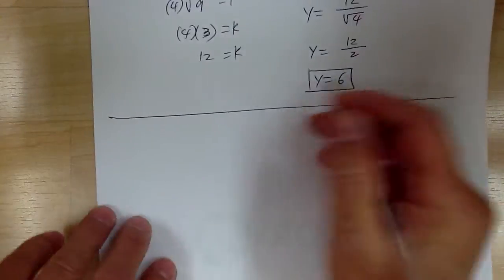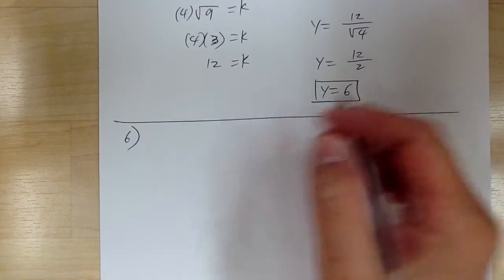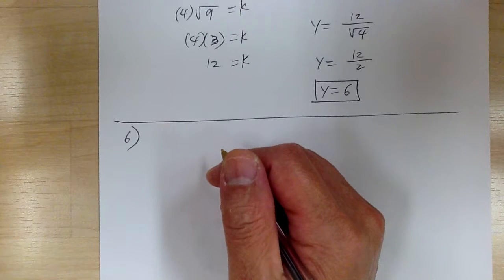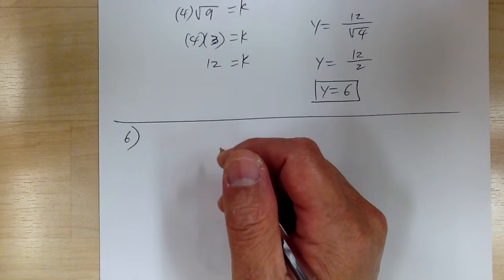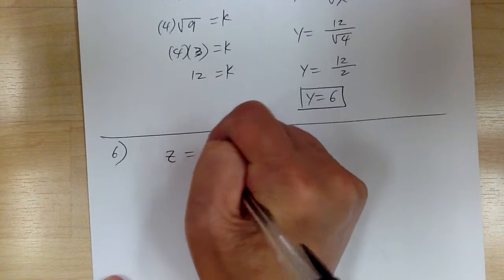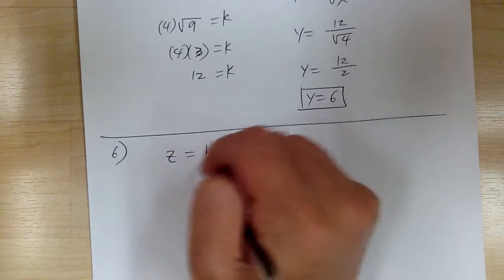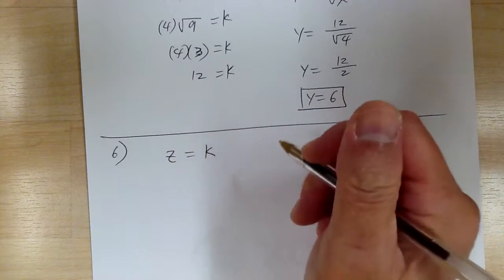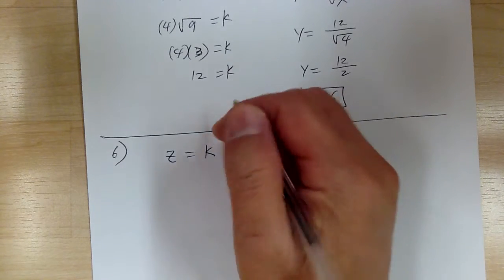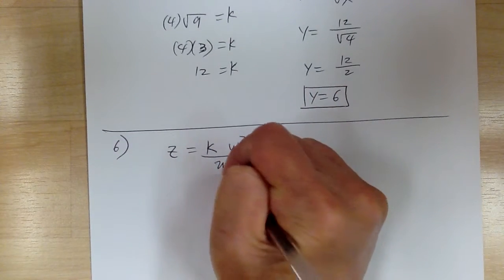Let's go to number 6. Number 6, you have it says z varies directly. So z varies directly. Whenever it's directly or jointly, it means it goes on the top. It always goes on the top unless it says inversely. So when it says inversely, it goes on the bottom.